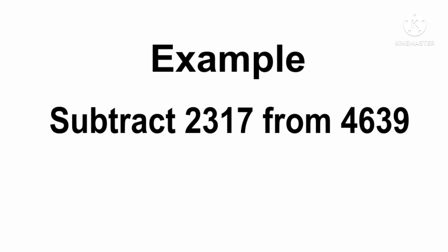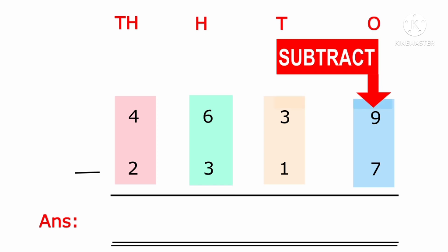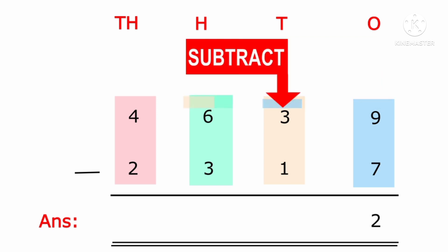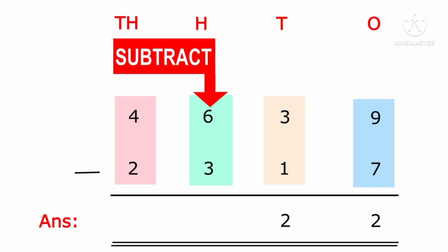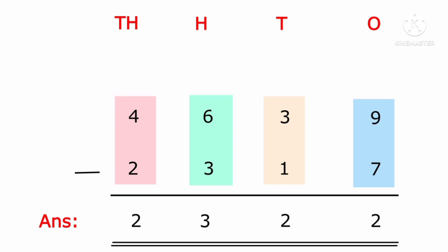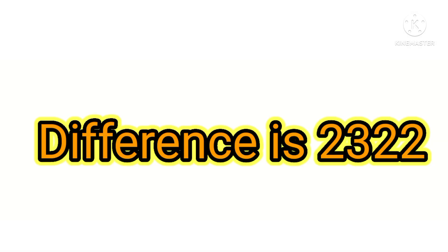Subtract 2,317 from 4,639. Step 1: subtract 7 from 9 in the ones place. Step 2: subtract 1 from 3 in the tens place. Step 3: subtract 3 from 6 in the hundreds place. Step 4: subtract 2 from 4 in the thousands place, and the result is 2,322.